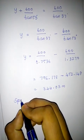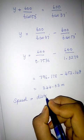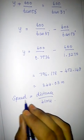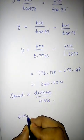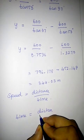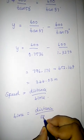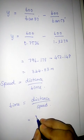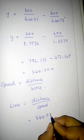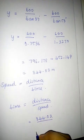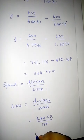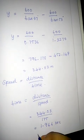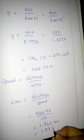Speed is equal to distance divided by time. Rearranging, time is equal to distance divided by speed. Distance is 344.03 meters and speed is 175 meters per second. Time equals 1.966 seconds, which rounds off to approximately 1.97 seconds.